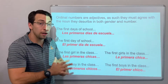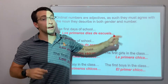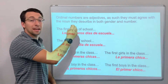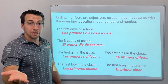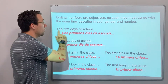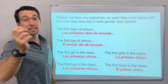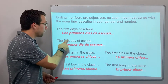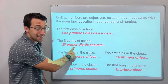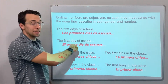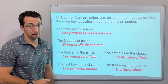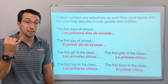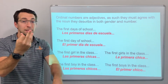Ordinal numbers agree with the noun they describe in both gender and number. Think: 'the first days.' Days is plural. El día, los días — it's masculine and plural. Los primeros días de escuela — the first days of school. El primer día — the first day of school. Los primeros días. El primer día. Two different forms. These are adjectives. Adjectives have four forms: masculine singular, masculine plural, feminine singular, feminine plural.